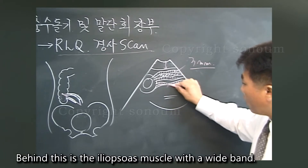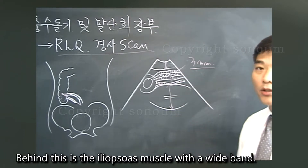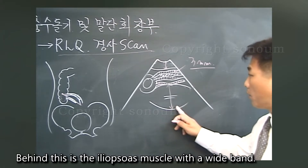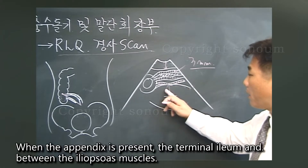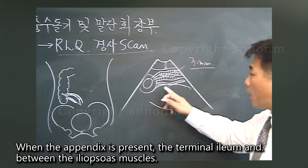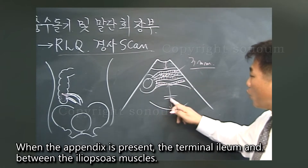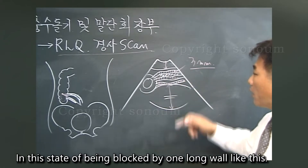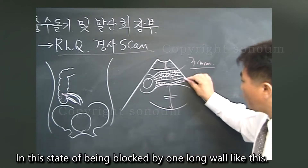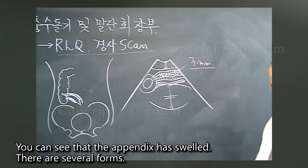Behind the terminal ileum is the iliopsoas muscle, appearing as a wide band. When the appendix is present, the terminal ileum ends between the iliopsoas muscles. In this blocked state, you can see that the appendix has swelled.